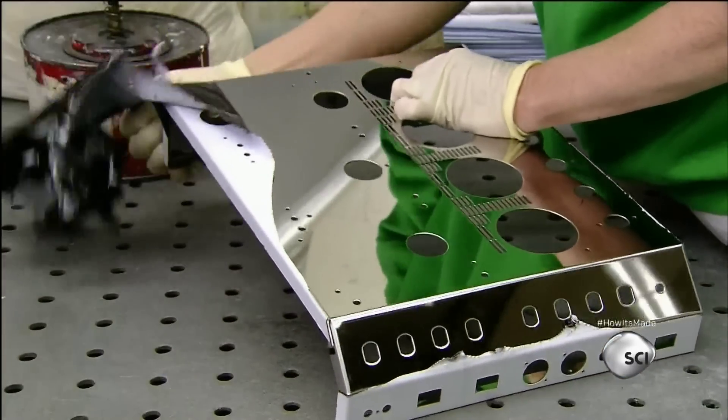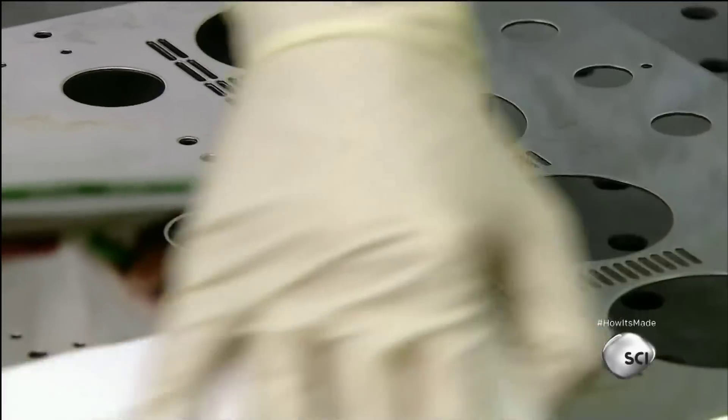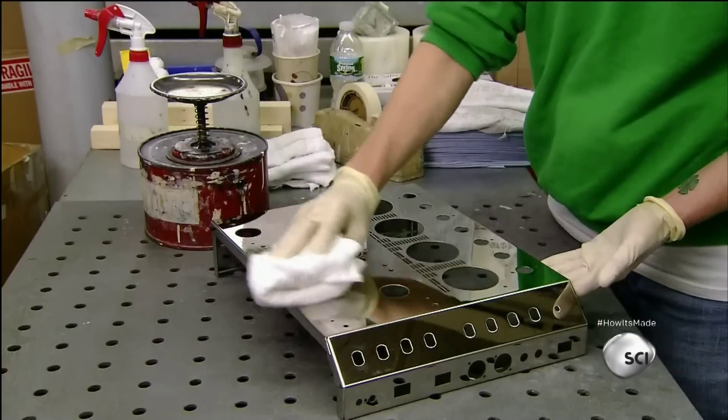Then they remove the adhesive film, which has been protecting the mirror-finished surface of the chassis. They clean off any remaining adhesive residue with alcohol.